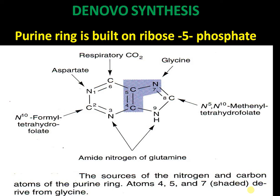In de novo synthesis, the purine ring is built upon ribose 5-phosphate. Carbons 4, 5, and nitrogen 7 are formed by glycine. Nitrogen 1 and N3 come from aspartate, and N9 comes from glutamine. Nitrogen N3 and N9 are built by the amide nitrogen of glutamine, while C2 and C8 come from N5,N10-tetrahydrofolate.